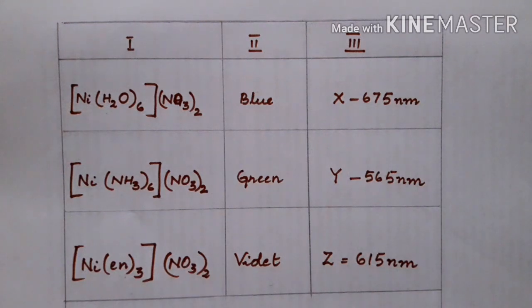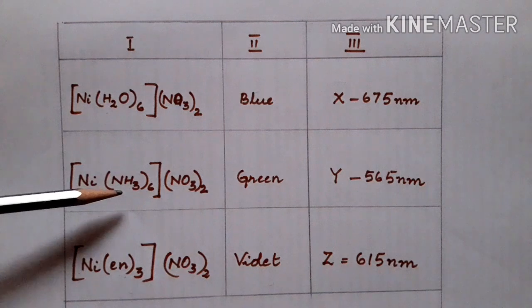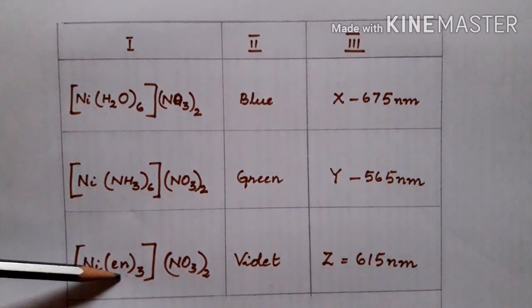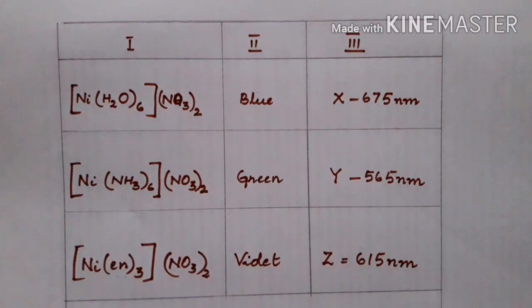First, identify which are the ligands present here. First case it is water. Second case it is ammonia, and third case it is ethylenediamine. Now we have to check the position of these ligands according to the spectrochemical series.